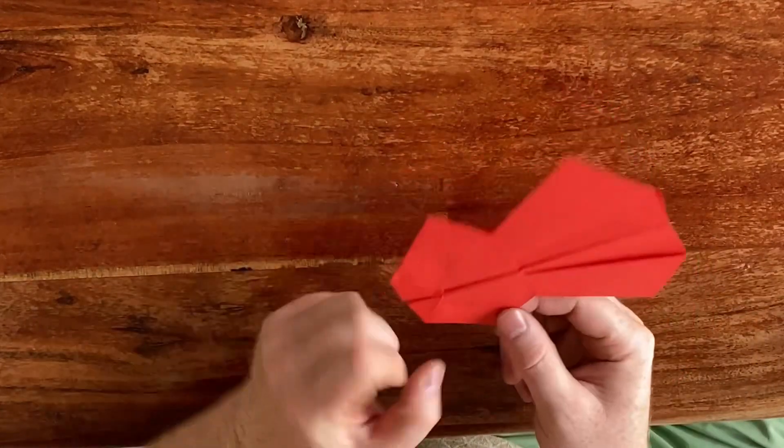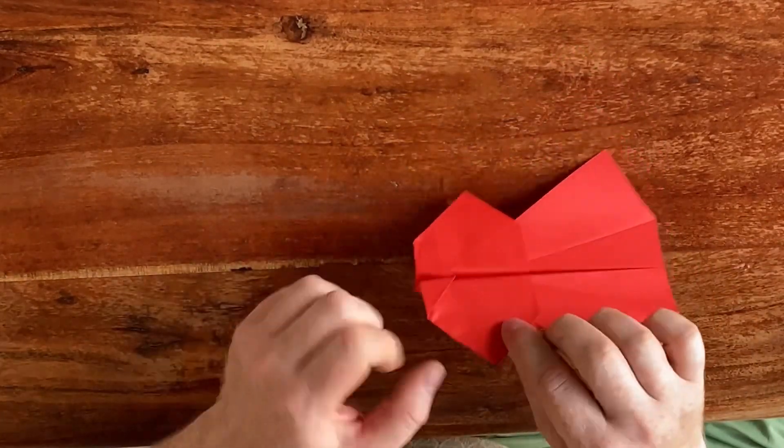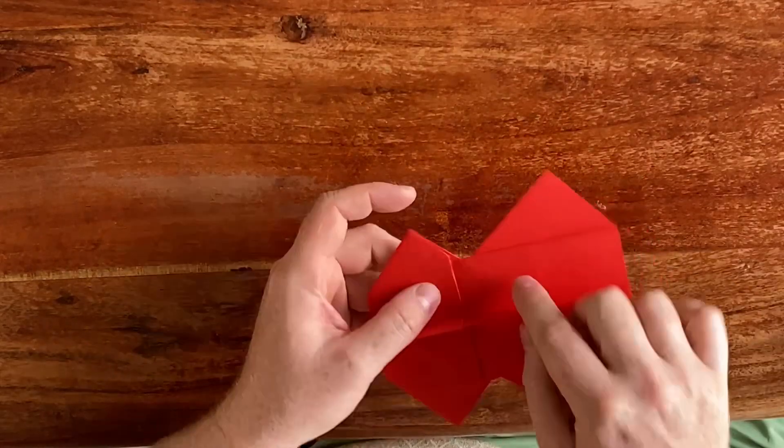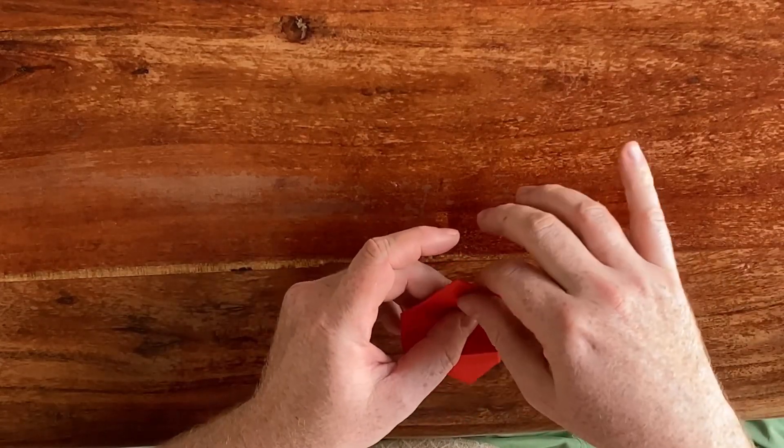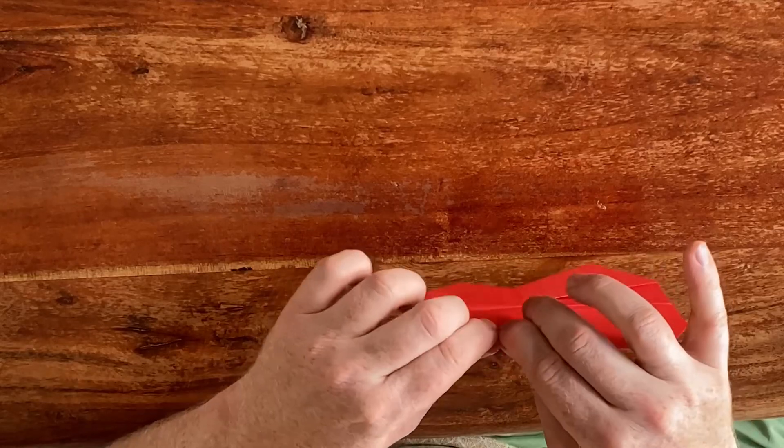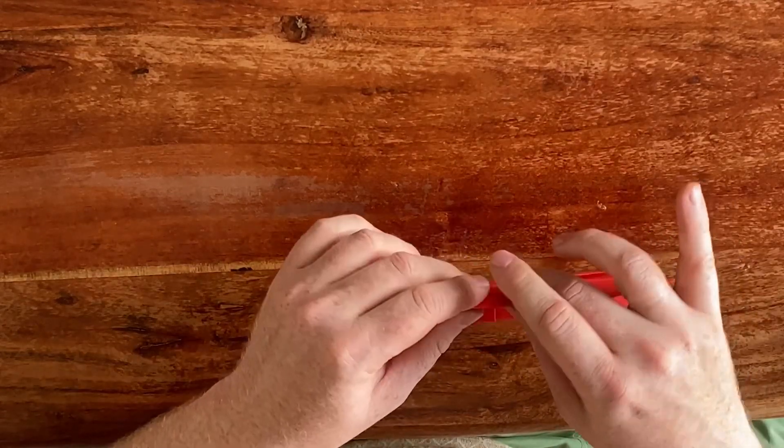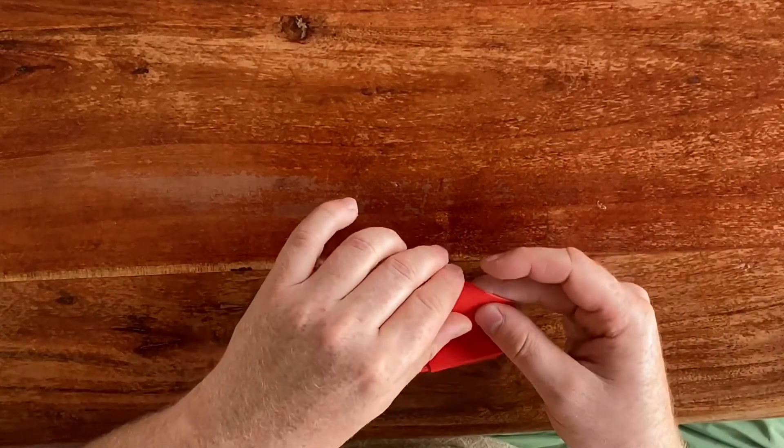Now here we have these corners, so you just want to fold them up. There's a layer behind it, so this layer here is going to catch the ear. There's already a crease there so you can just fold it where it will naturally want to fold, like so.